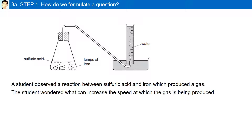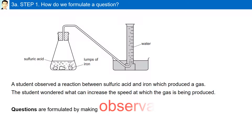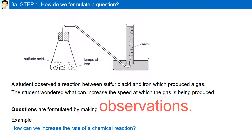How do we formulate a question? A student observed the reaction between sulfuric acid and iron, which produced a gas. The student wondered what can increase the speed at which the gas is being produced. Questions are formulated by making observations. For example: How can we increase the rate of a chemical reaction?